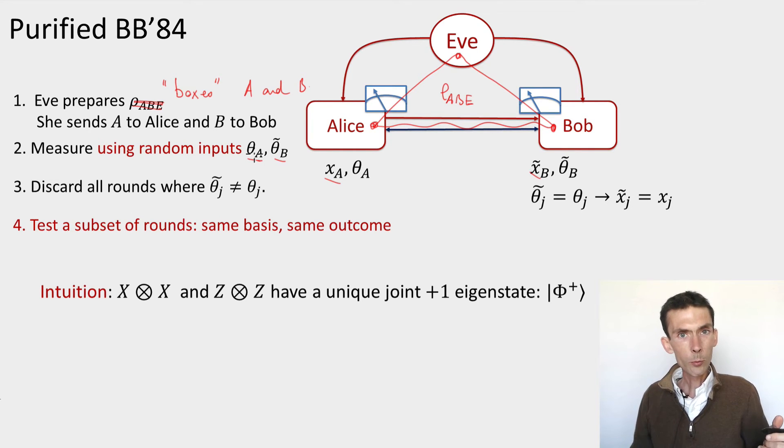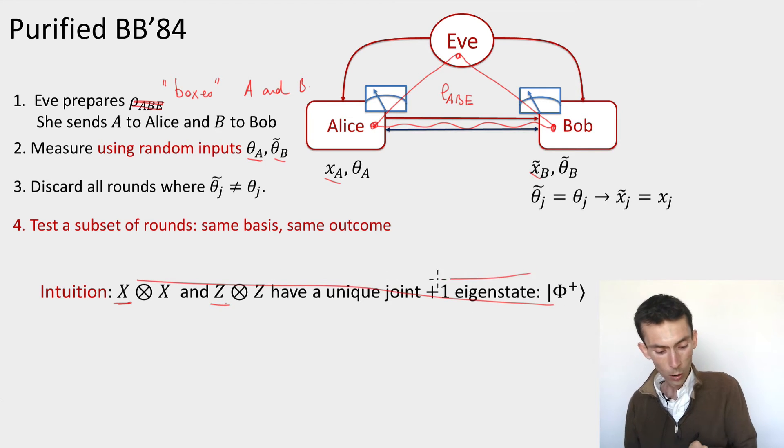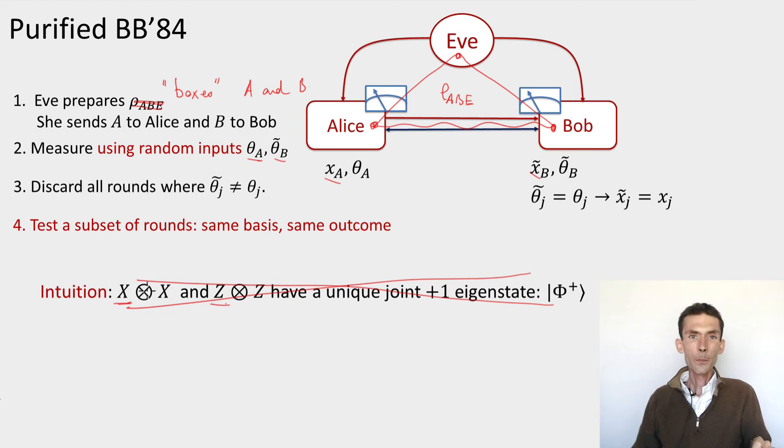All right, so if we proceed with the protocol as we did before, we discard a certain number of rounds and then we test a certain number of the remaining rounds. And remember the previous intuition that we had? This is no longer valid anymore because this only holds if I know that the device is performing a measurement in the Hadamard basis or the computational basis. This no longer holds, so the intuition is wrong. We have to replace it by something else.